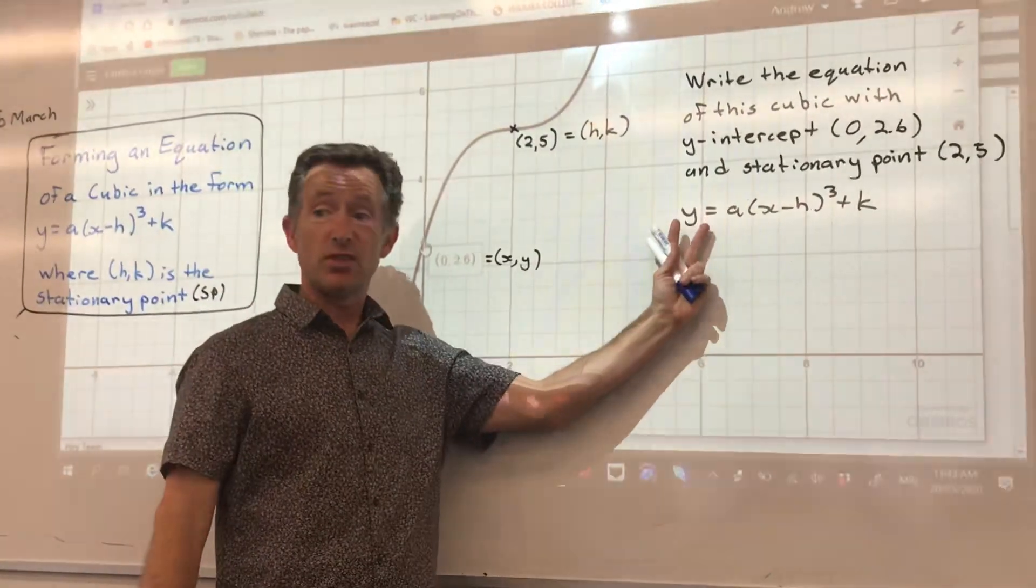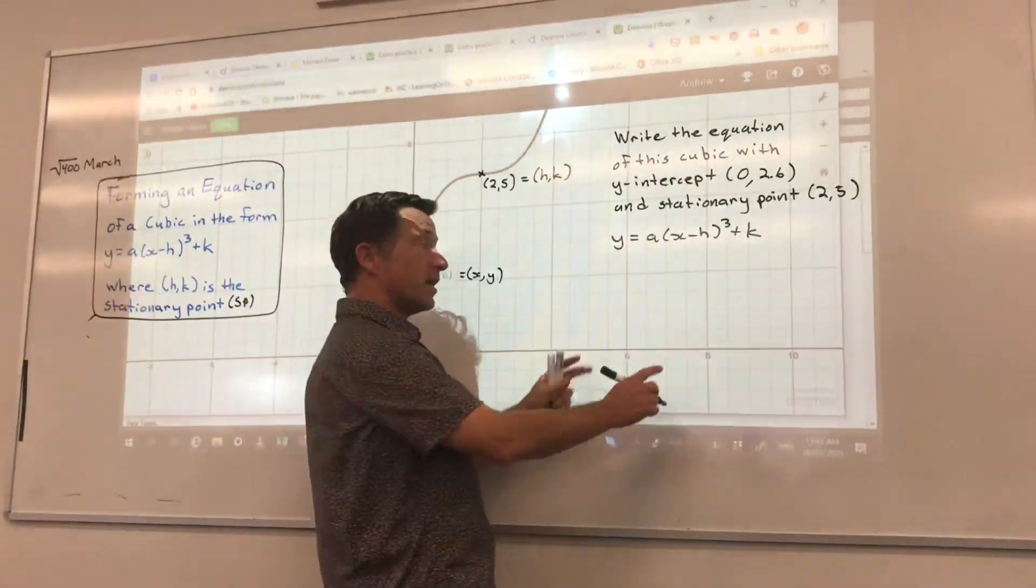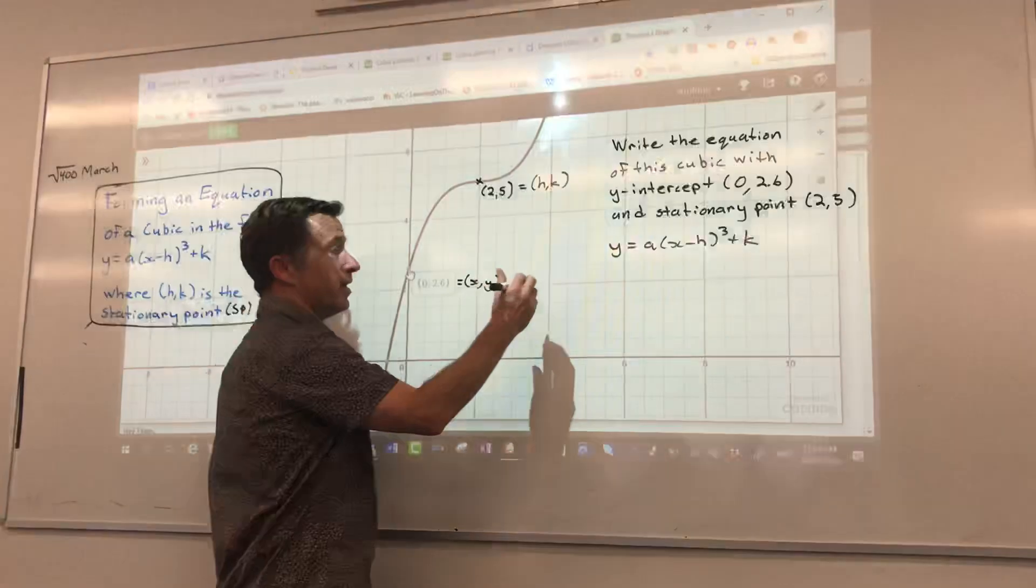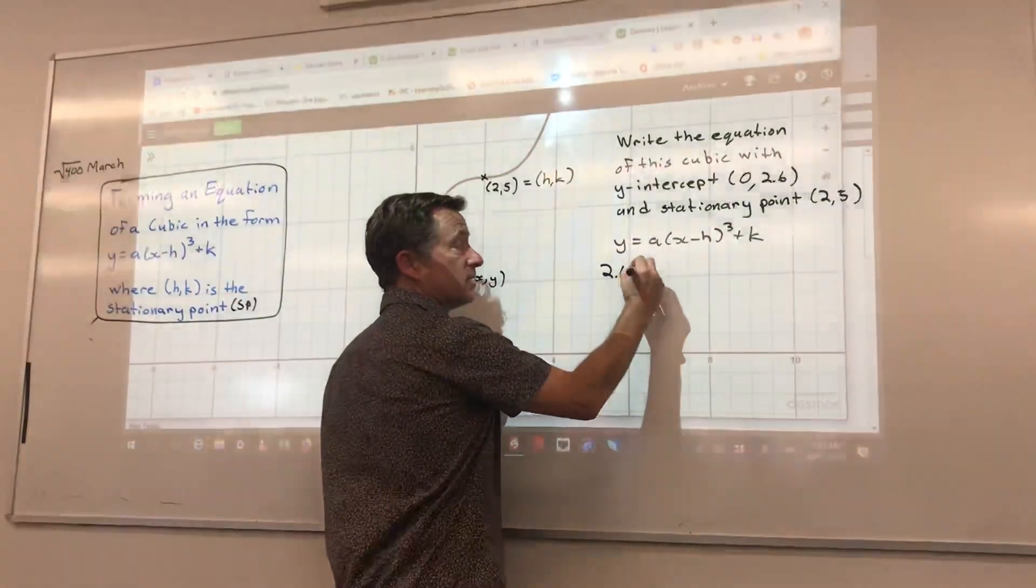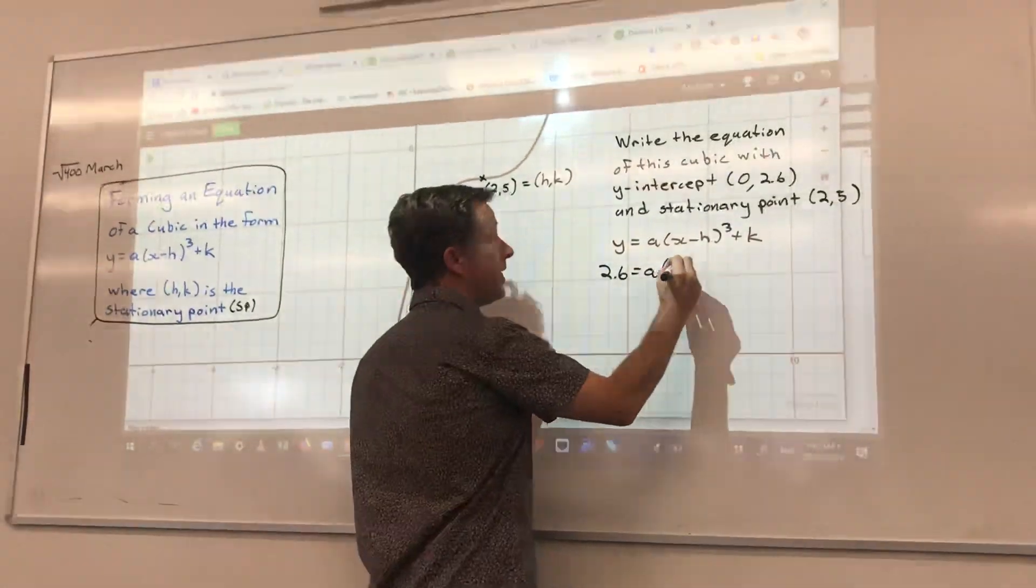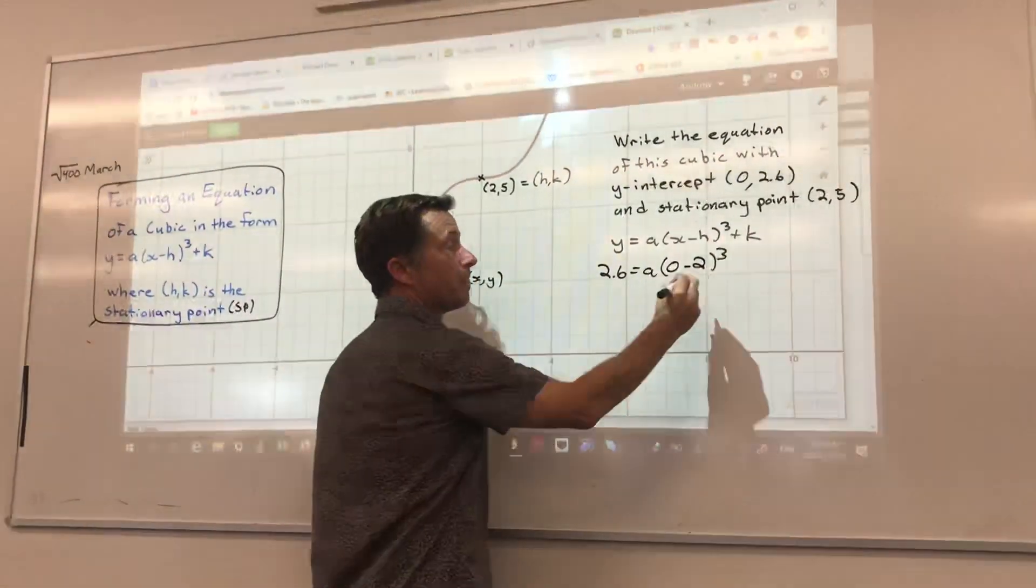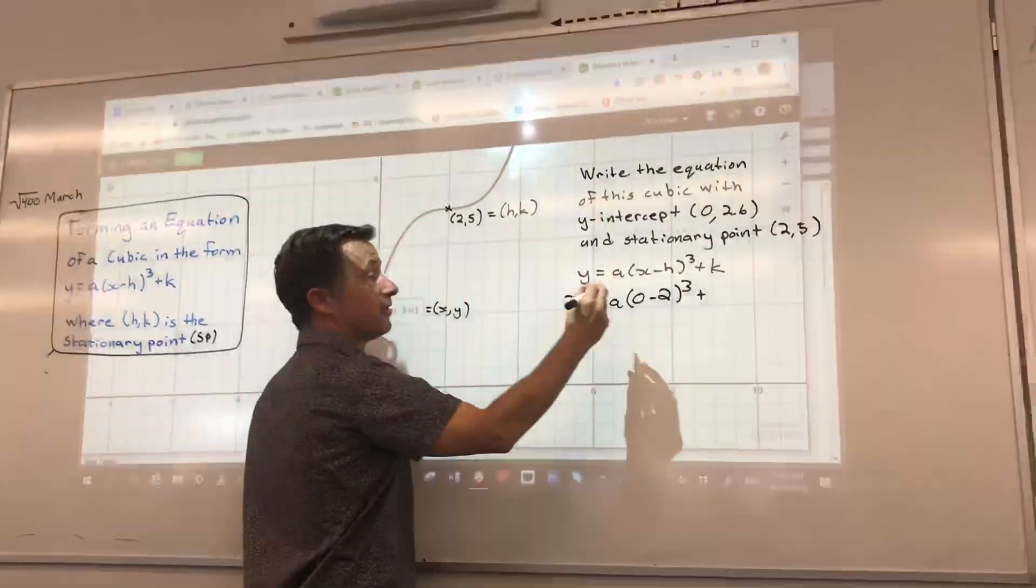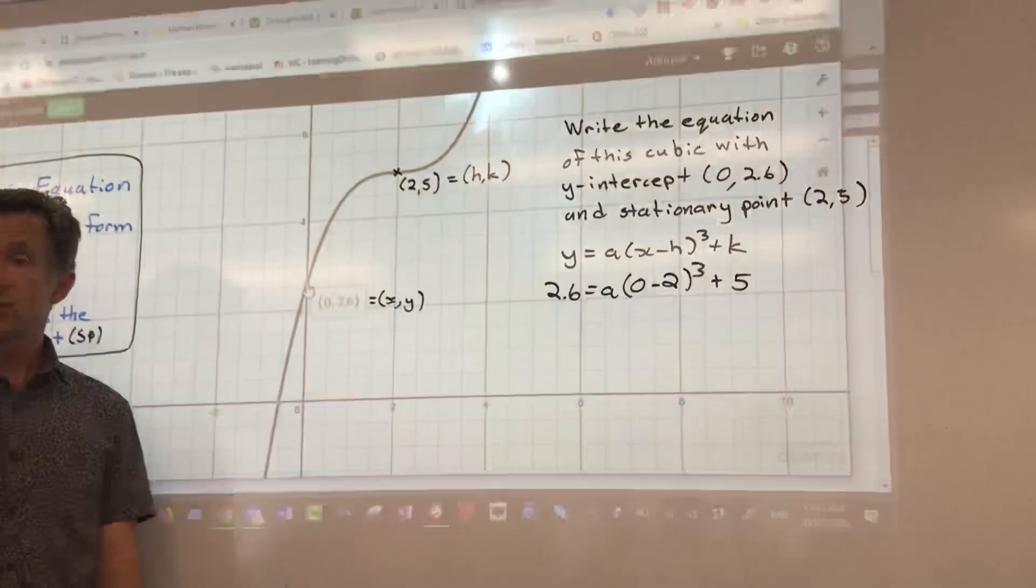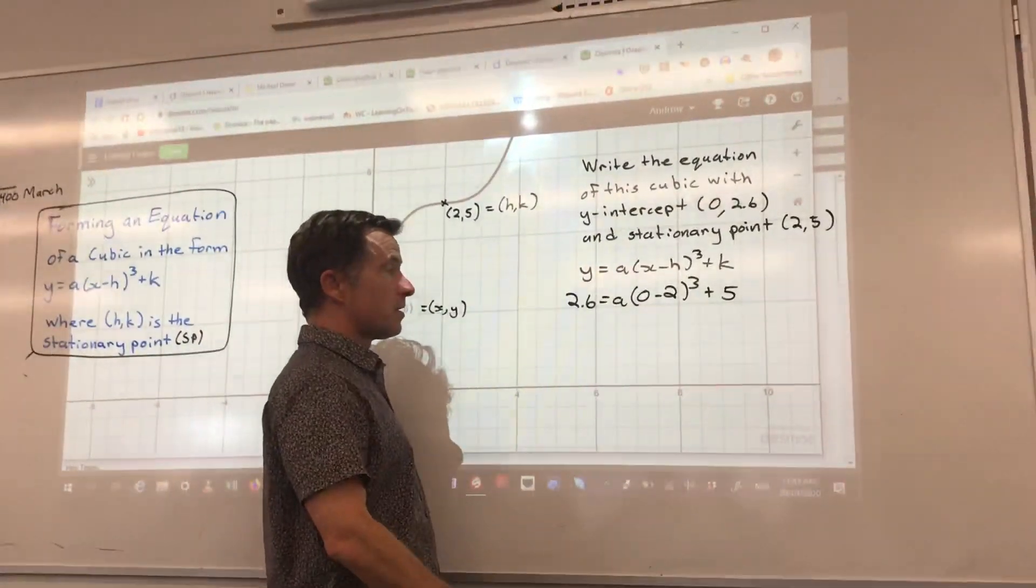So would you be okay if I just crammed all of those in there at once and solve for a? Yeah. When I did this at first, I'm like, just do x and y and then do h and k. But I'm just going to put all of them in and say 2.6 equals a, x is 0 minus 2 cubed plus 5. Okay? So we crammed it all in there and I'm going to solve for a just like I did with the parabola.